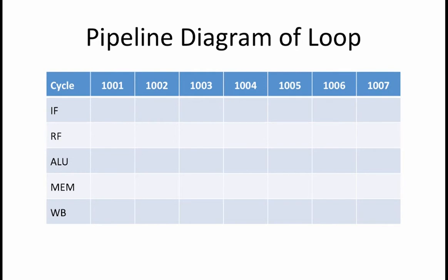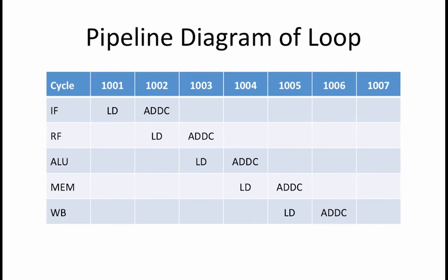Our loop begins with a load operation. We see our load instruction in the IF stage in cycle 1001. The load operation then proceeds down the five stages of the pipelined beta. Next comes the ADDC instruction. Since there is no dependency between the load and the ADDC instruction, the ADDC instruction begins in cycle 1002 and proceeds through all five stages of the beta pipeline as well.